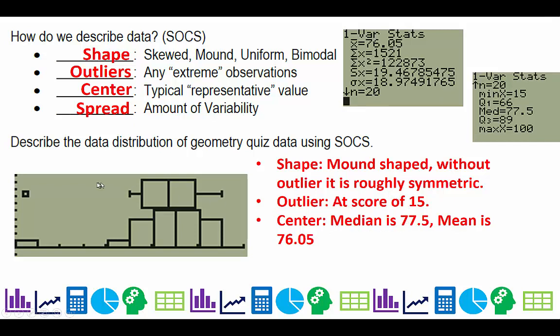I would lean towards the median because of the outlier. The spread, you could use the standard deviation of 19.5, or the IQR of 23. Again, the outlier influences us to use the IQR and the median to report the data.